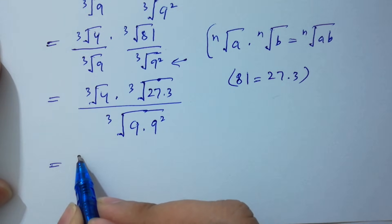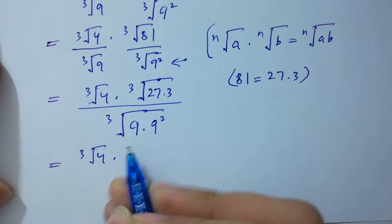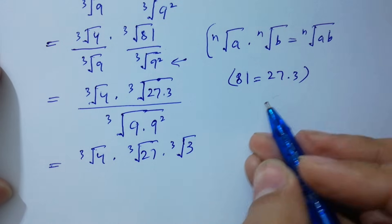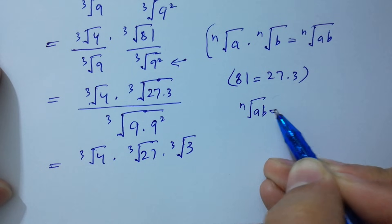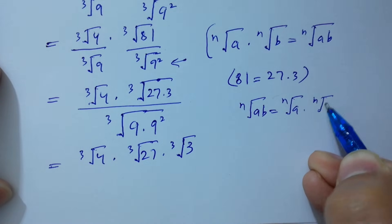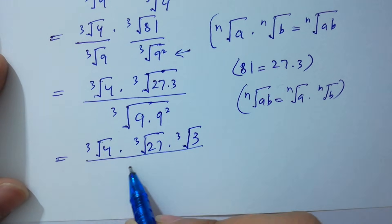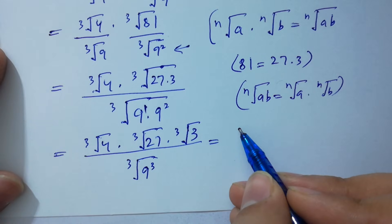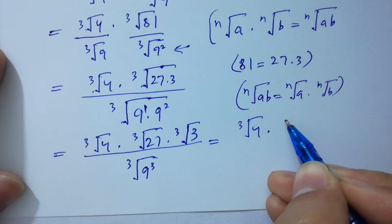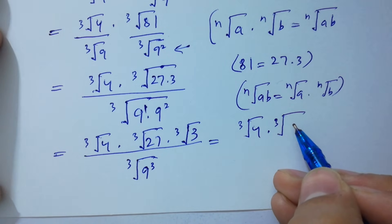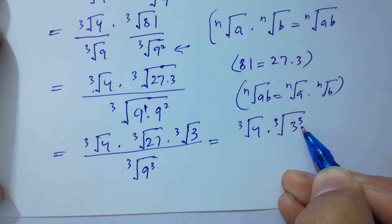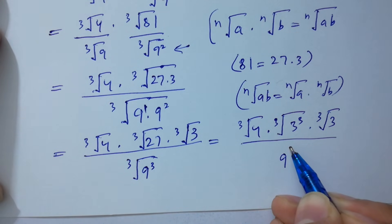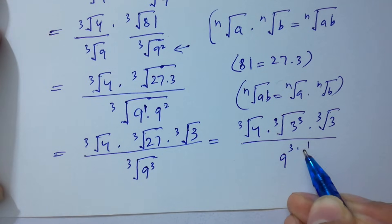We have cube root 4 times cube root 27 times cube root 3 over cube root 9. Since n-th root of (ab) equals n-th root of a times n-th root of b, and cube root of 27 is 3 (since 3 cubed is 27), the denominator exponent 1 plus 2 equals 3, giving cube root 9 cubed equal to 9.